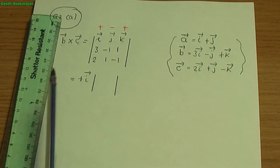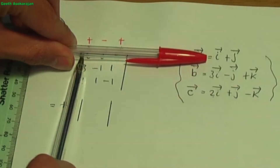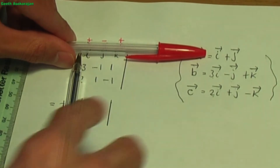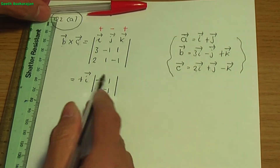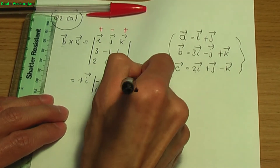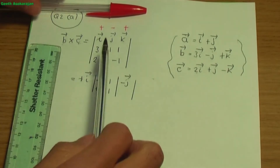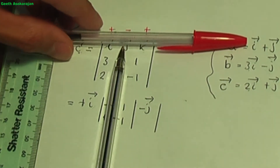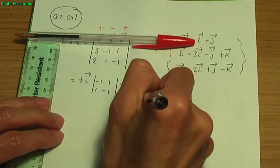Ignoring the row and column for i gives elements minus 1, 1, 1, minus 1 for that 2 by 2. Continuing, minus j multiplied by the 2 by 2 with elements 3, 1, 2, minus 1 — found by ignoring the row and column for j.